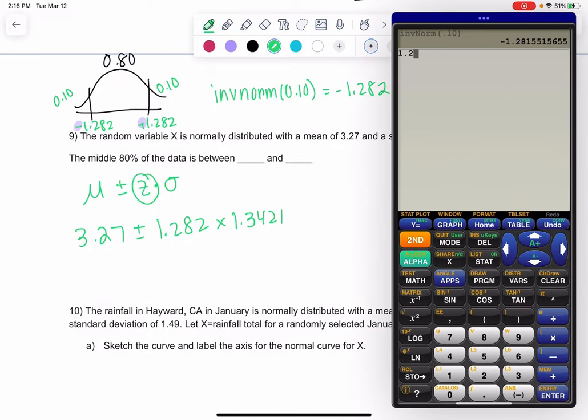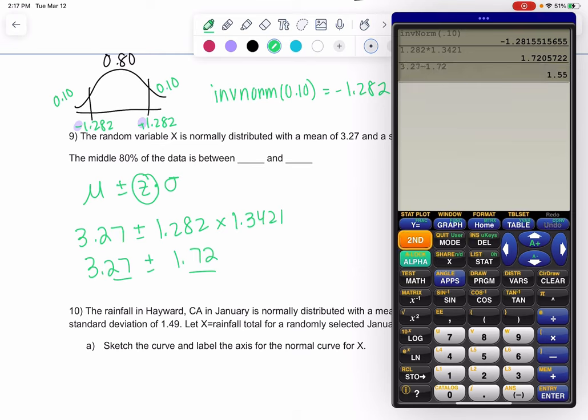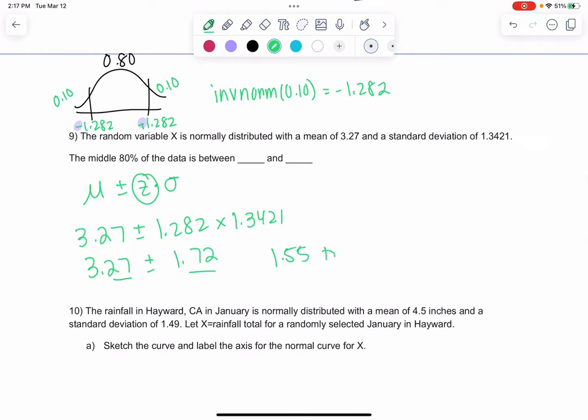We get 3.27 plus or minus 1.72. That's enough decimal places. I usually just make these at least match. I like to subtract first. It just makes more sense. So it's somewhere between 1.55 and 4.99. What that's telling me is for this data set, between 1.55 and 4.99 is 80% of the data.